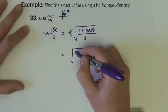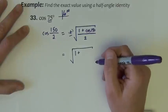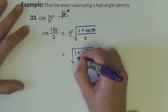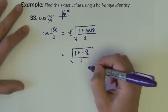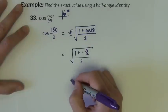We have the square root of 1 plus, I need the cosine of 150 degrees. Cosine of 150 degrees is negative square root of 3 over 2, over 2.